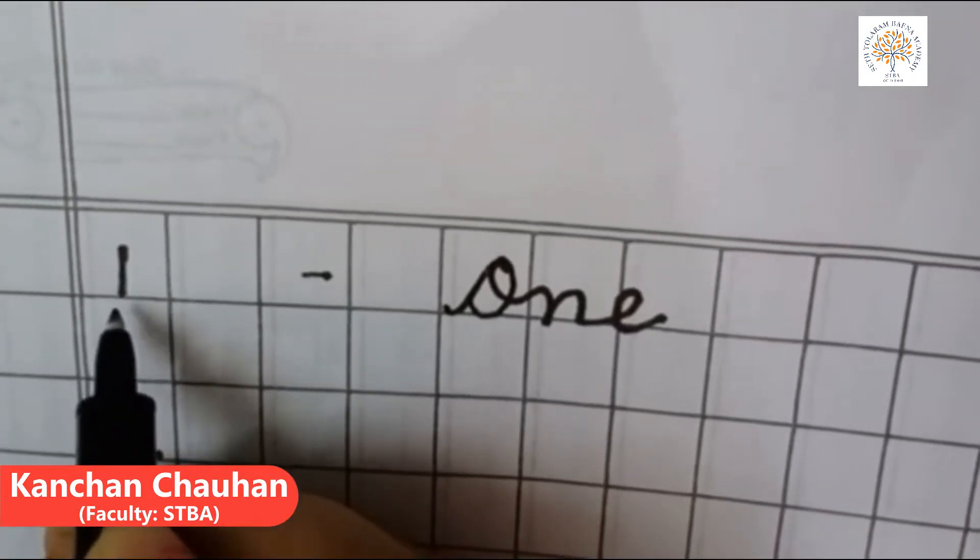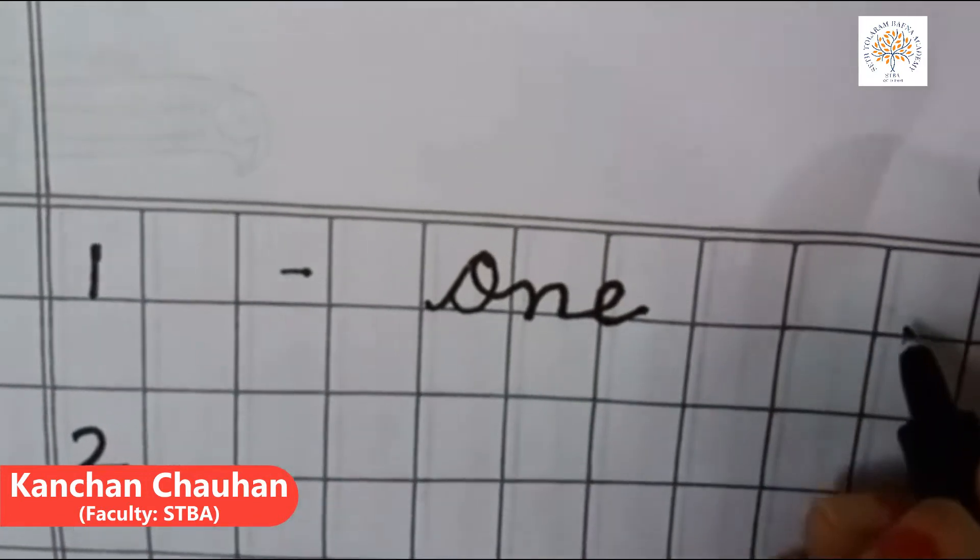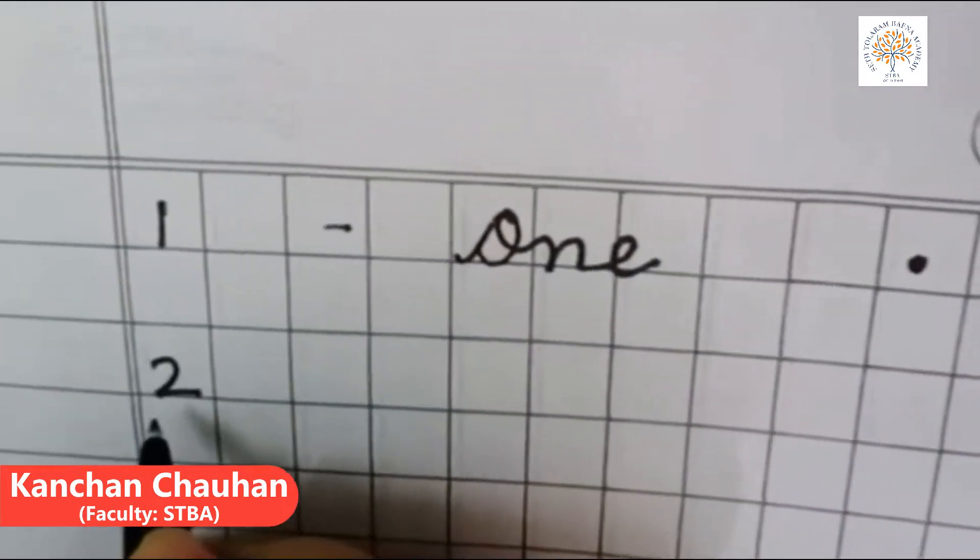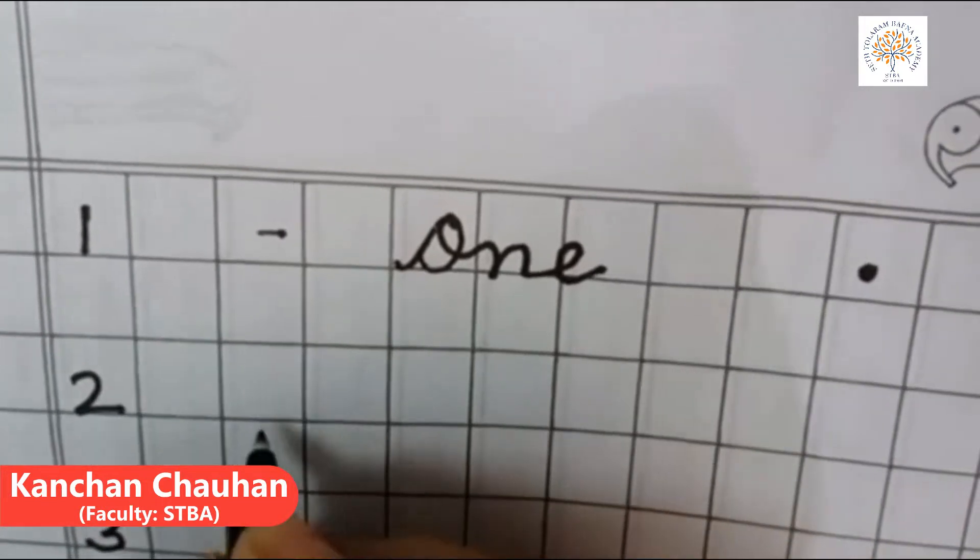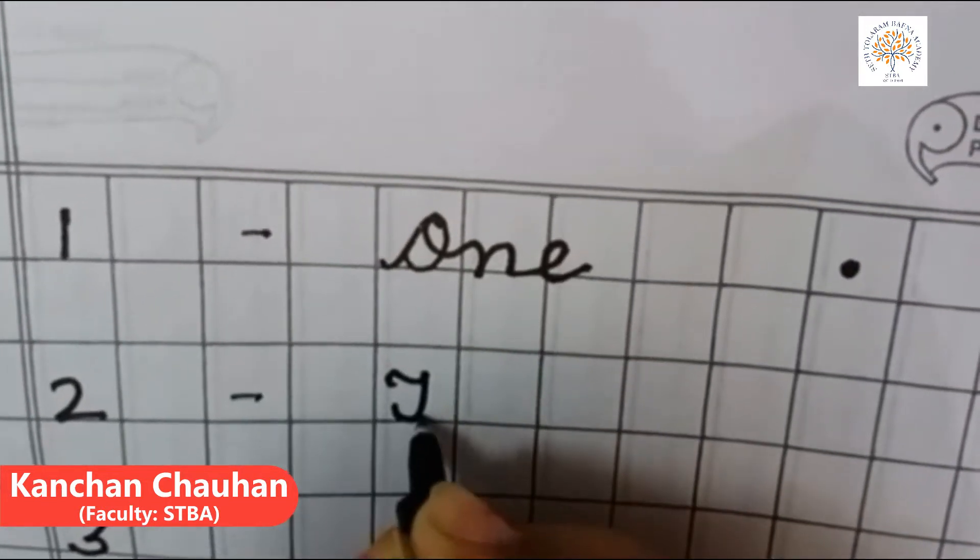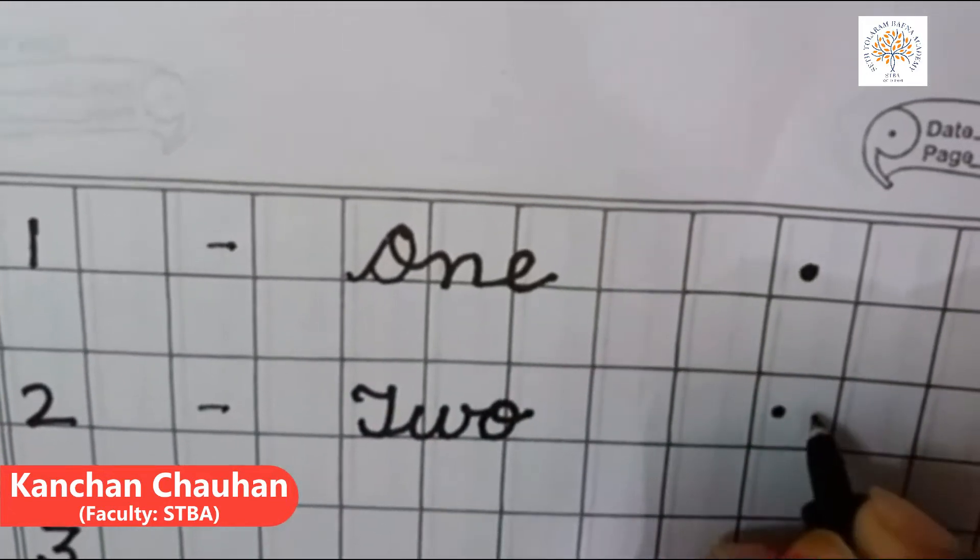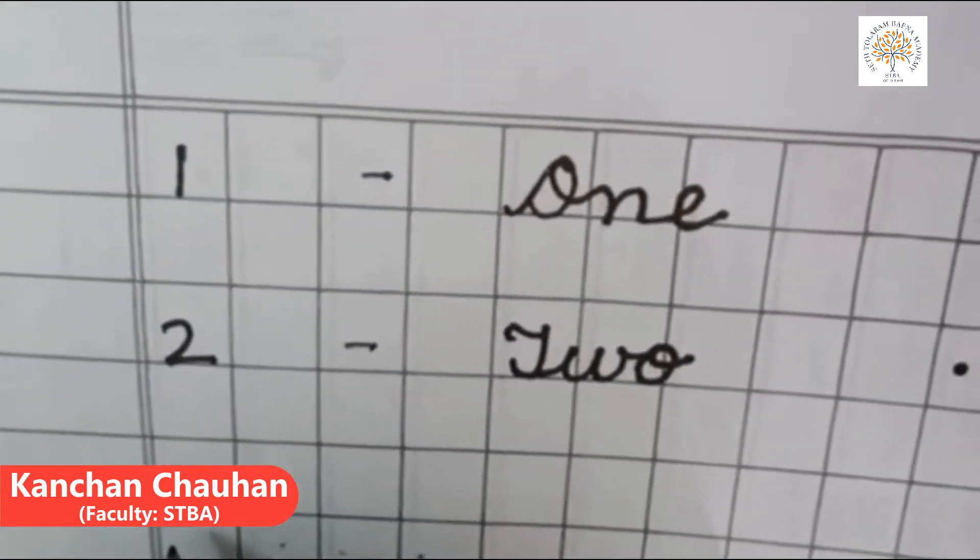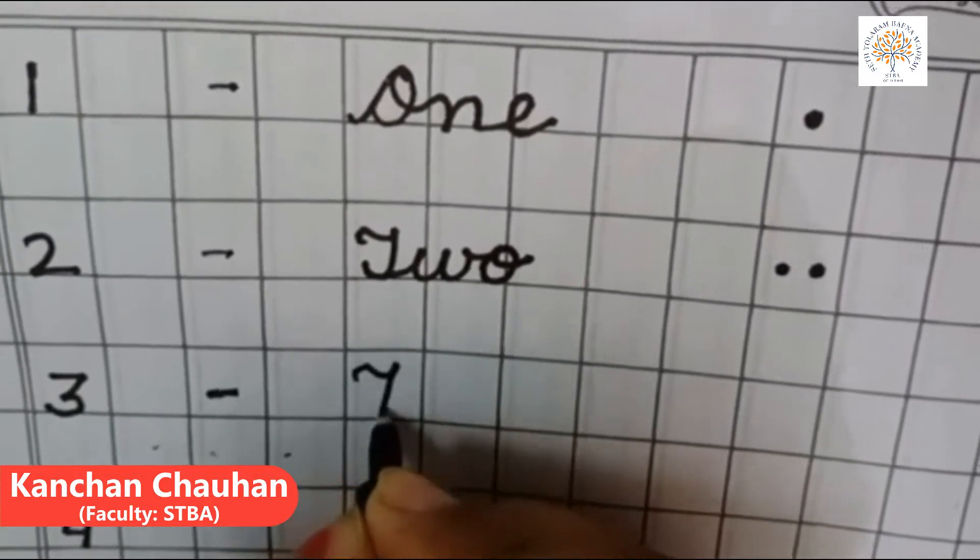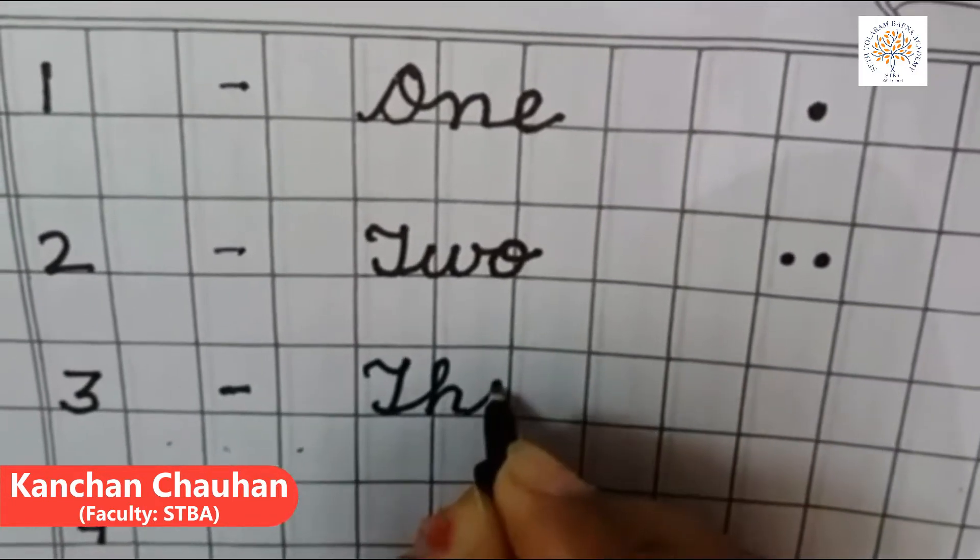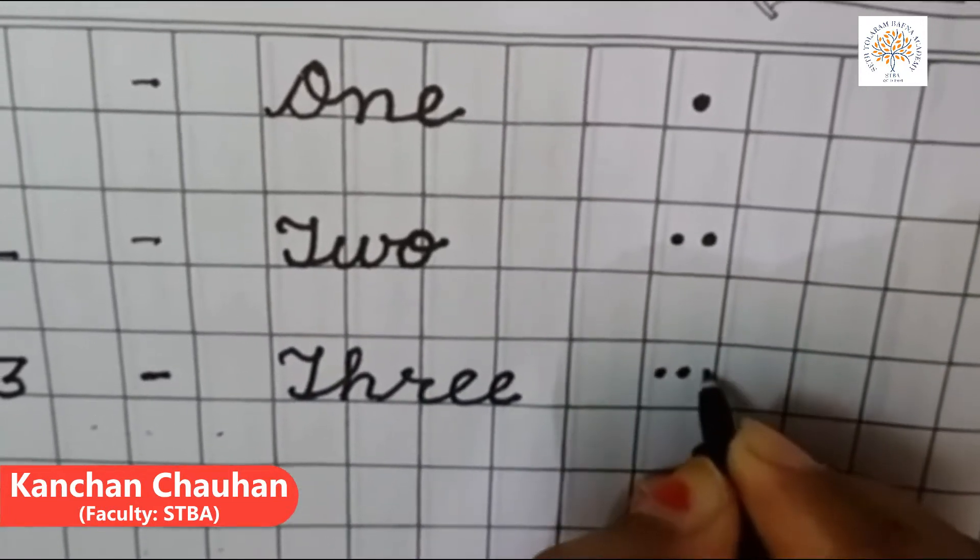This is numeral 1 and for it number name O-N-E-1. This is numeral 2 and for it number name is T-W-O-2. Number name is T-H-R-E-E-3.